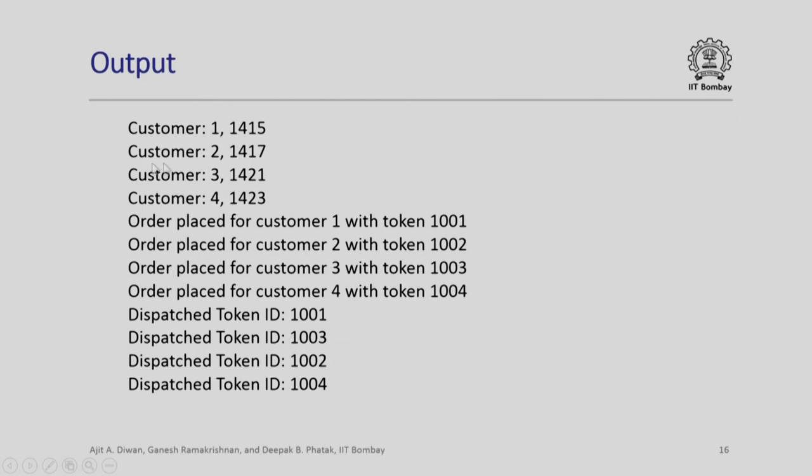Here is the sample output when you execute this program — incidentally, the program itself is given as a separate file so you can run it. It will show customers 1, 2, 3, 4 arriving, then order placed for each customer with their respective token numbers, and finally the dispatch token IDs showing the dispatch queue fulfilled in the order in which items are prepared in the kitchen. In this session we have implemented the simplified model of the Mumbai Vada Pav restaurant. Later, when we study additional data structures such as lists, we will see a more efficient way of handling order information in the kitchen. Please read this program in conjunction with the previous session's illustration so that you are well versed with how queues are used to implement such restaurant functionality. Thank you.